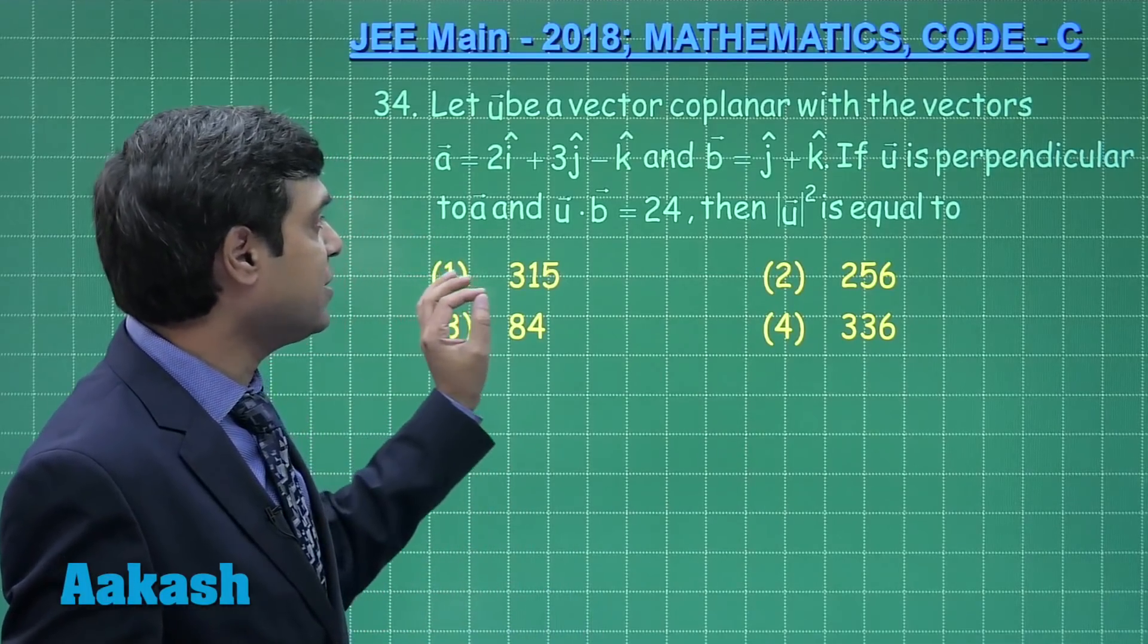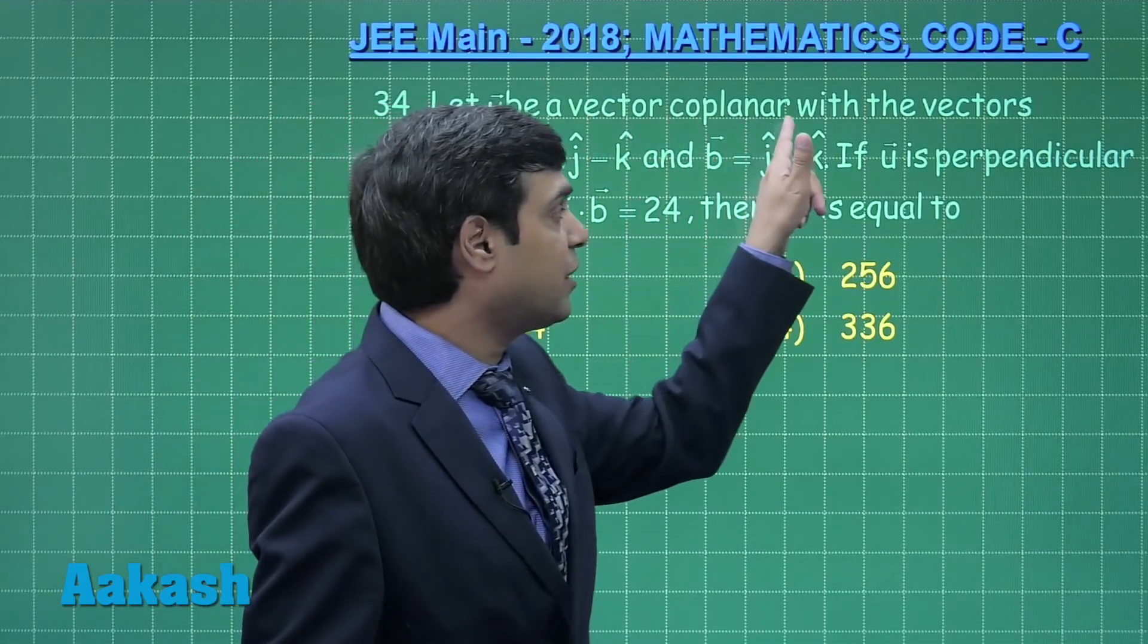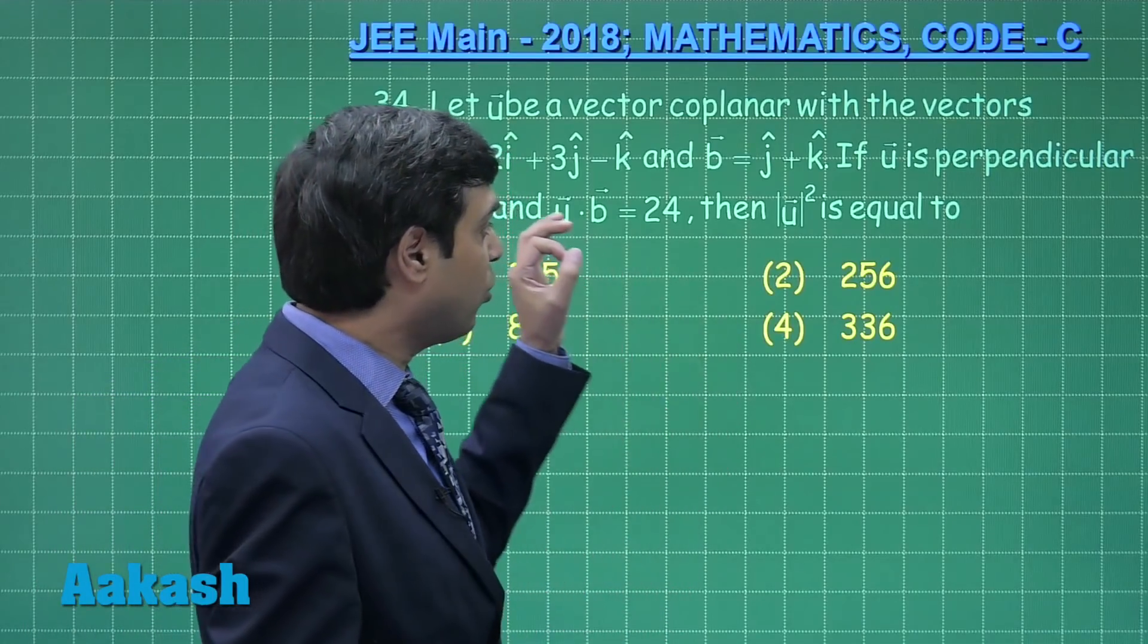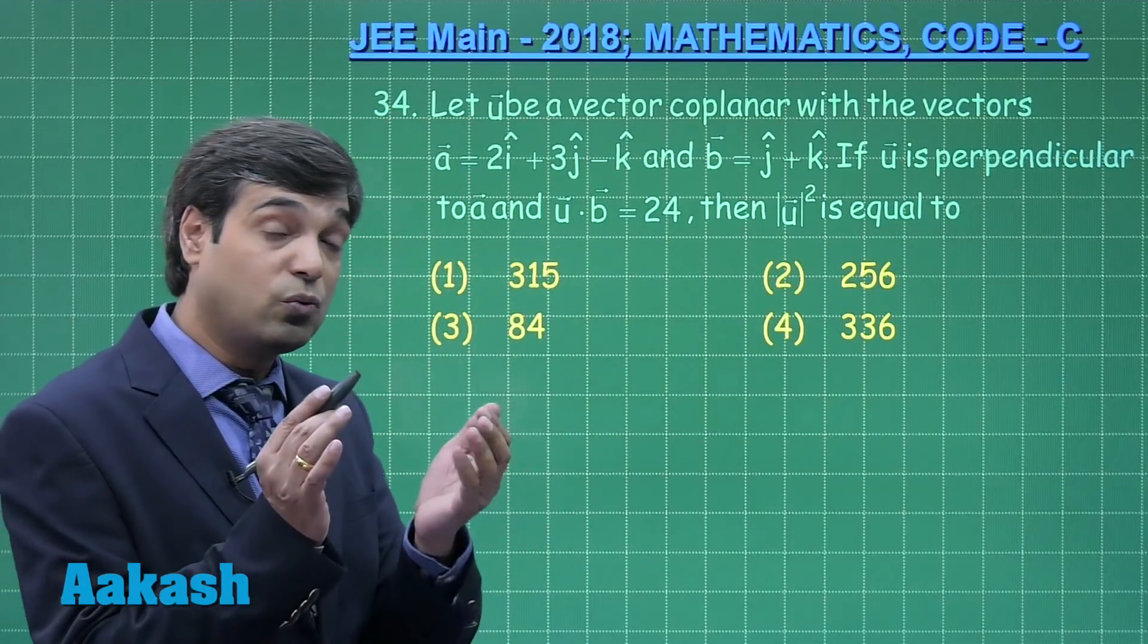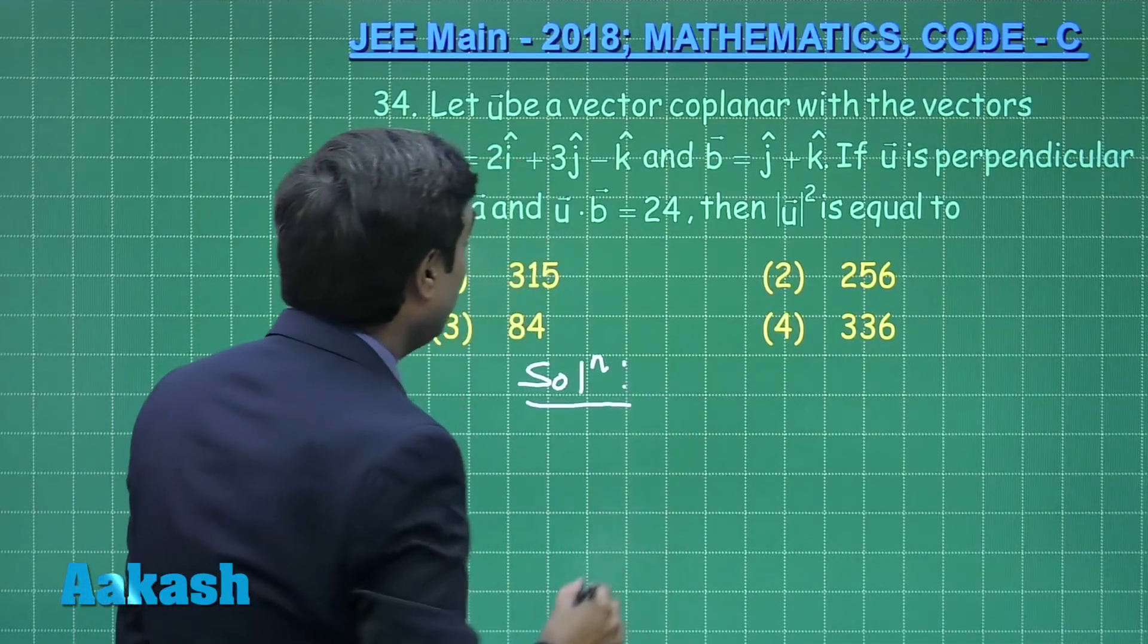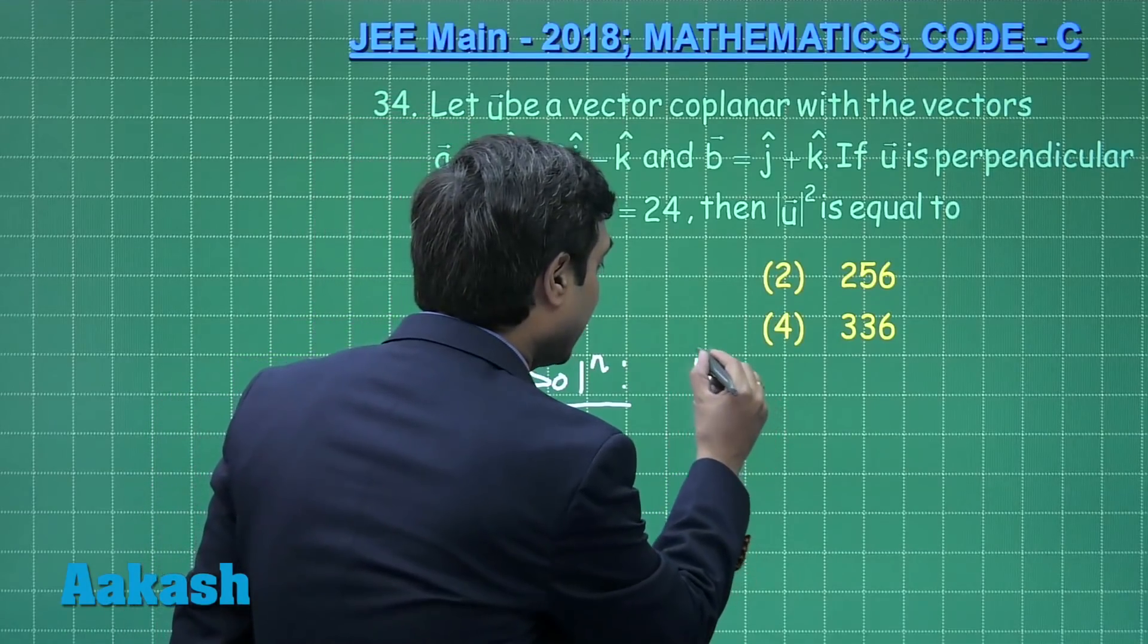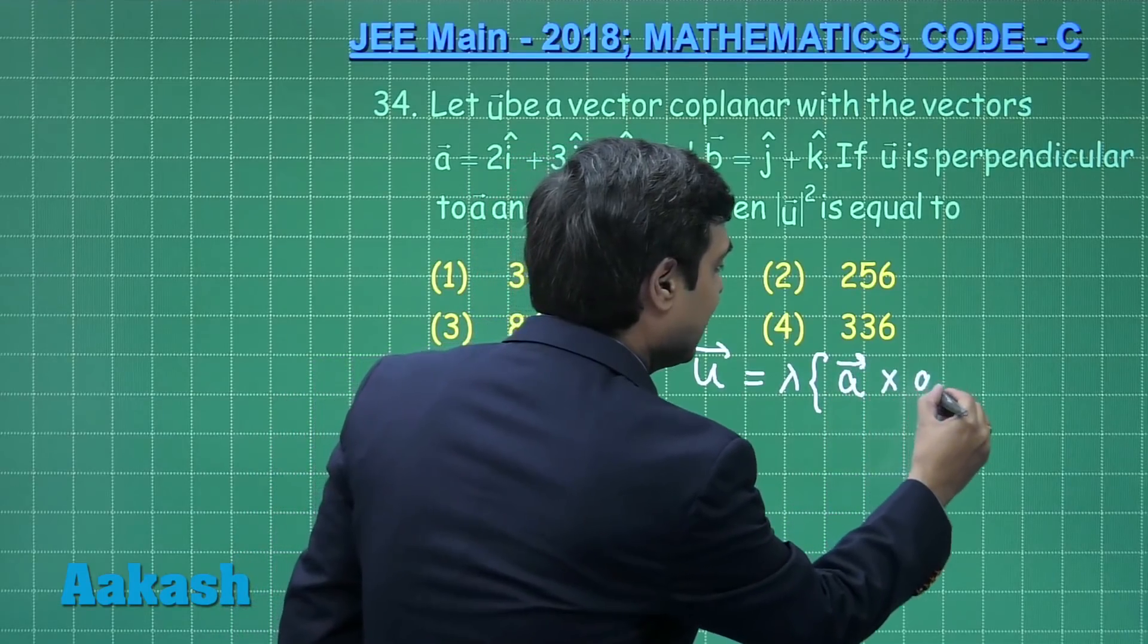A conceptual question from vectors. We can start it in two different ways. The first line says u is a vector coplanar with two given vectors, meaning u, a, and b are coplanar, hence the scalar triple product is 0. If I go with the second line, which says u is perpendicular to a, we are looking for a vector. Let us start with the second one: u is a vector coplanar with two given vectors a and b and perpendicular to a, meaning that u can be considered as lambda times a cross b.